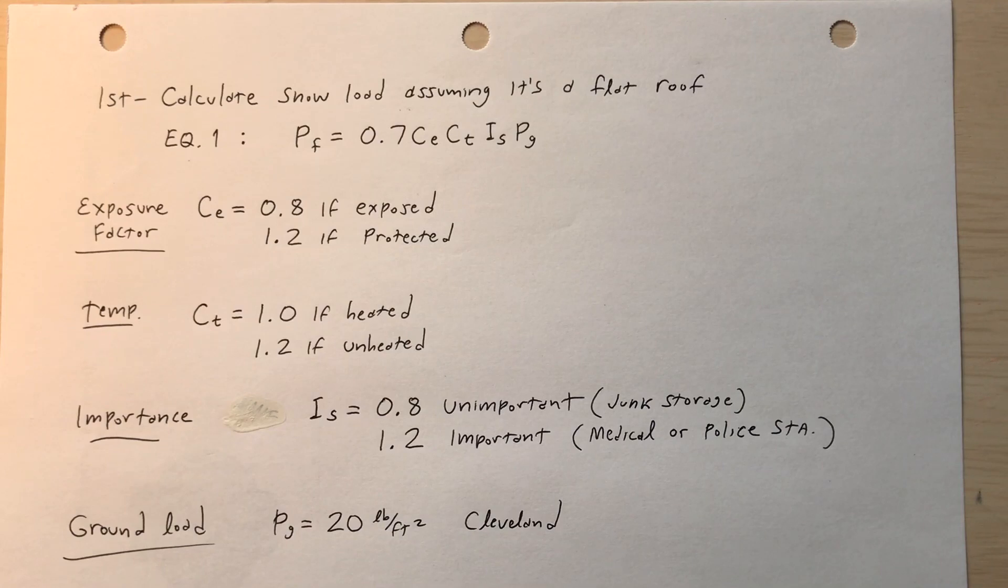The exposure factor, that's c_e, 0.8 if it's exposed, 1.2 if it's protected. In the directions here, I said that it would be wind protected, a rural environment. So I'll use 1.2.